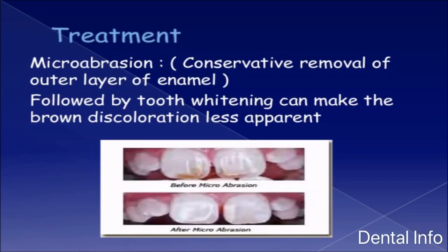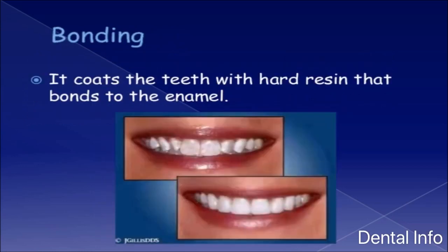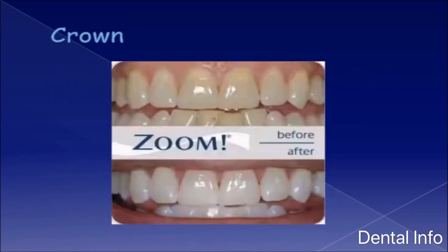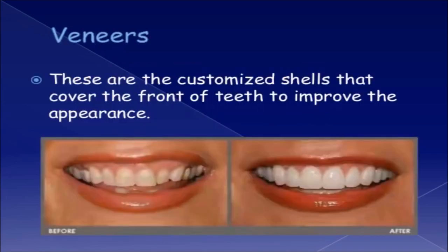Treatment: Microabrasion — conservative removal of the outer layer of enamel followed by tooth whitening can make the brown discoloration less apparent. Bonding — coats the teeth with a hard resin that bonds to the enamel. Crown placement. Veneers — customized shells that cover the front of teeth to improve appearance.